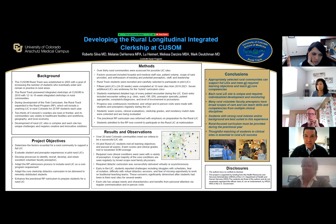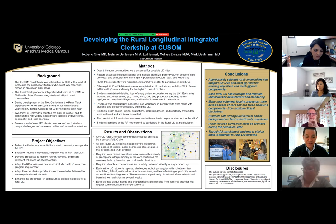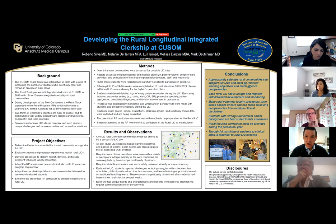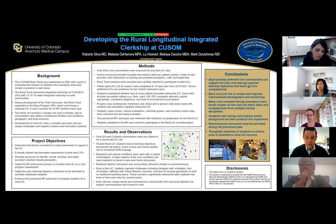We've made a few conclusions about this during our development. The big one is that appropriately selected sites can support a full LIC — and I say appropriately selected because it takes a lot of work to determine that. A big finding, something we already knew, is that each site is unique. Steamboat Springs is very different from Wray and very different from Cortez and Alamosa, and each one of those sites is going to require its own unique monitoring and development.